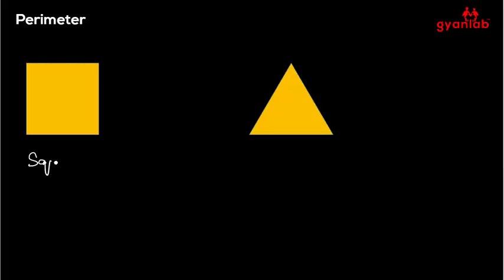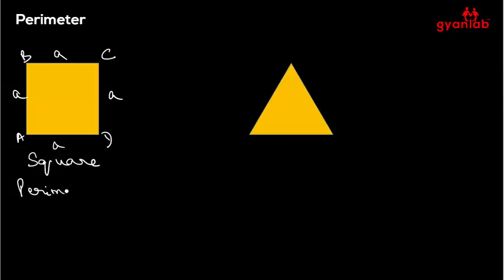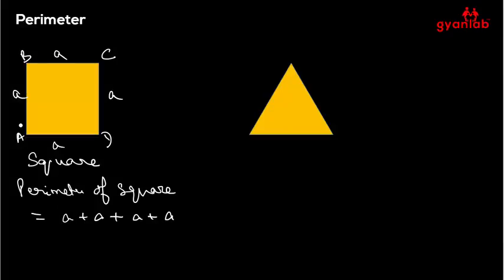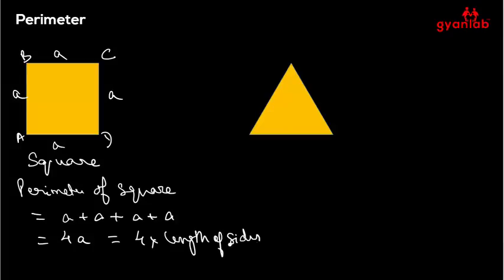Let's find the perimeter for some special cases. Take the example of a square. A square is a special case of a rectangle where all sides are equal. The perimeter of a square would be a + a + a + a, covering all four sides, which equals 4a — that is, 4 times the length of a side.